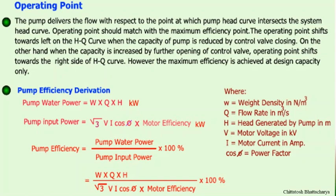Pump hydraulic power can be calculated as W × Q × H, where W is the weight density of water, Q is the flow rate in m³/s, and H is the head generated by the pump in meters. Pump input power is √3 × V × I × cos φ × motor efficiency. Pump efficiency equals pump water power divided by pump input power.